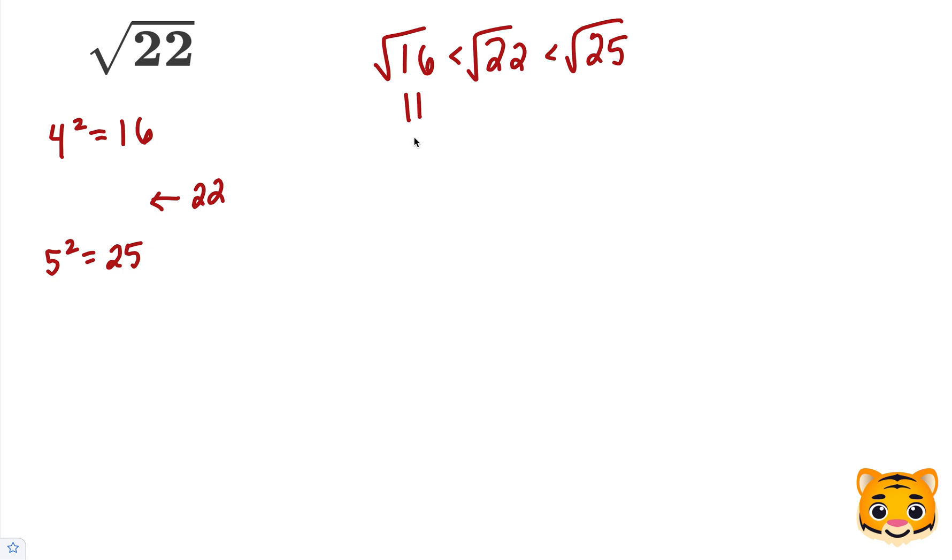We can rewrite the square root of 16 as 4 and the square root of 25 as 5, because 4 squared is 16 and 5 squared is 25.